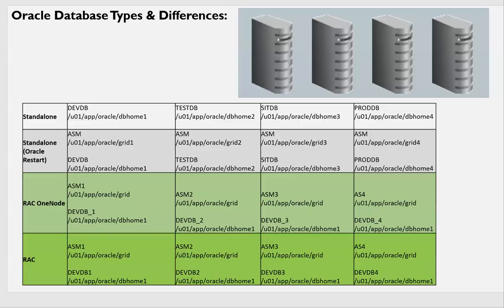If you have RAC One Node, you have ASM with one cluster installation. The difference between Oracle Restart and RAC One Node is that in Oracle Restart you have separate ASM installations to support four different databases, whereas in RAC One Node, the same ASM cluster is installed on all nodes and serves all databases. For full RAC, you have four nodes with a single clusterware on all four nodes, running all your databases — devdb, testdb, sitdb, and proddb — simultaneously.